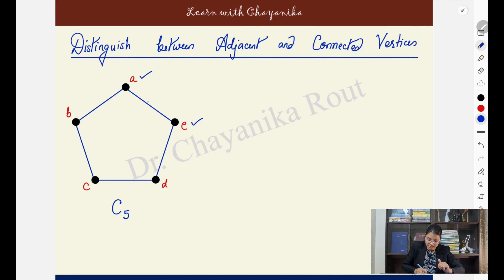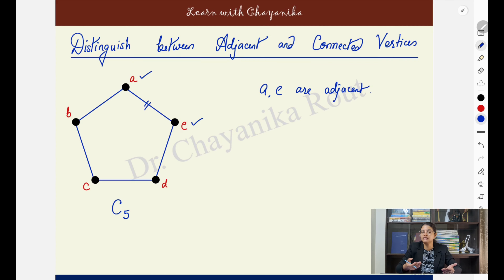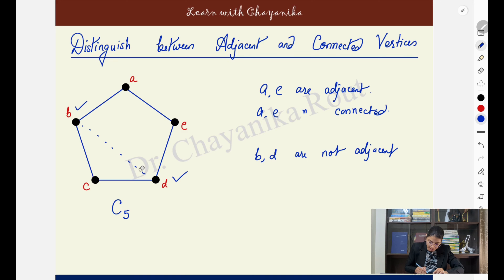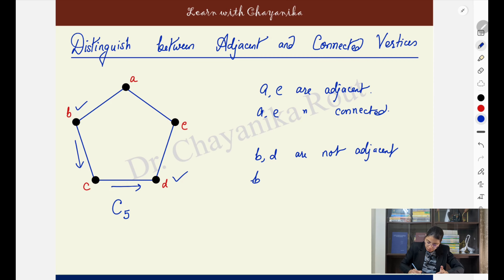Between A and E there is a direct edge, so they are adjacent vertices and definitely connected — the edge itself is the path. Now if I talk about vertices B and D, they are not adjacent vertices because there is no direct edge between them. But B and D are connected vertices because there is a path between them and I can reach from B to D. So remember: adjacent vertices are always connected, but connected vertices need not be adjacent always.